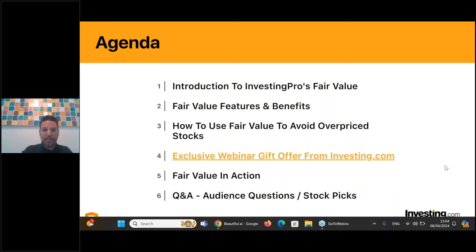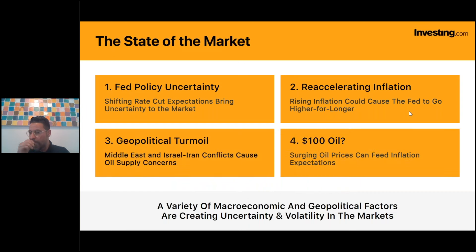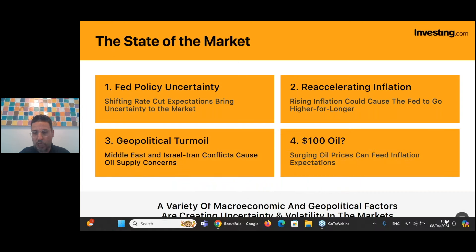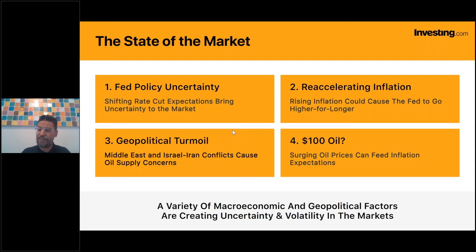Let's take a step back and realize what's going on in the market right now - what factors are driving price action. Like I mentioned, we're coming off the worst week in the market for 2024. The main driver is the uncertainty surrounding Fed policy rates. Rate cut expectations have come down significantly - at the start of the year we were expecting as many as seven cuts, with the first supposed to come in March.